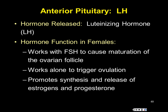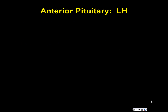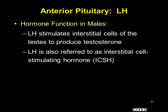In summary: LH promotes ovulation, rupturing of the follicle, and subsequent synthesis of progesterone and estrogen in the female. In the male, LH has an analogous role — it promotes the cells between sperm-forming cells to produce testosterone. Before it was known that LH is present in both sexes, it was called interstitial cell-stimulating hormone, or ICSH, but LH is now the more widely accepted terminology.